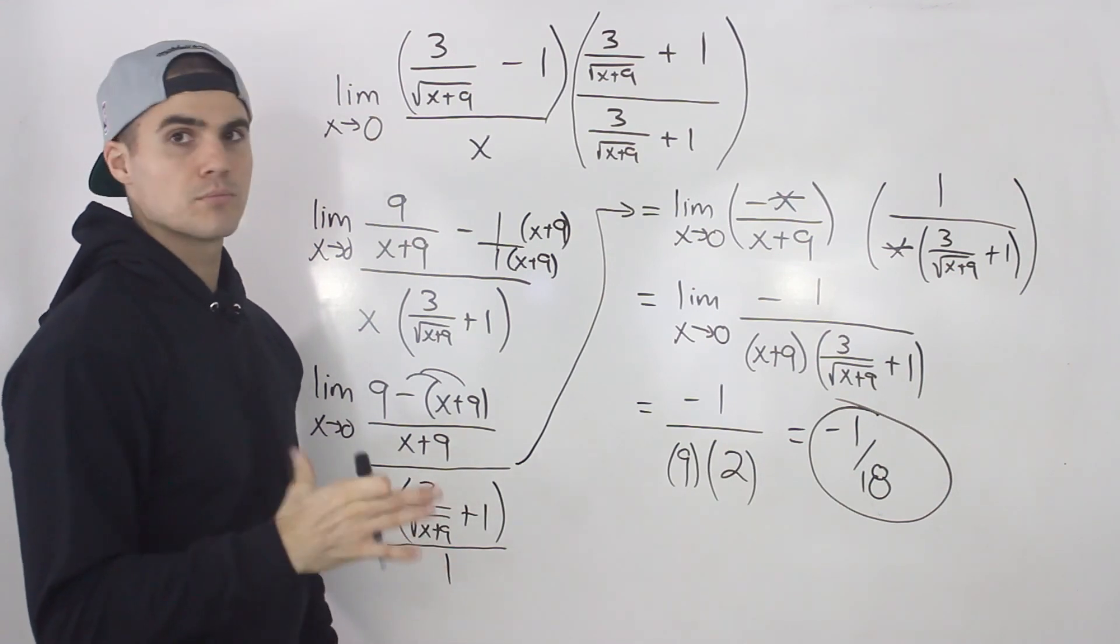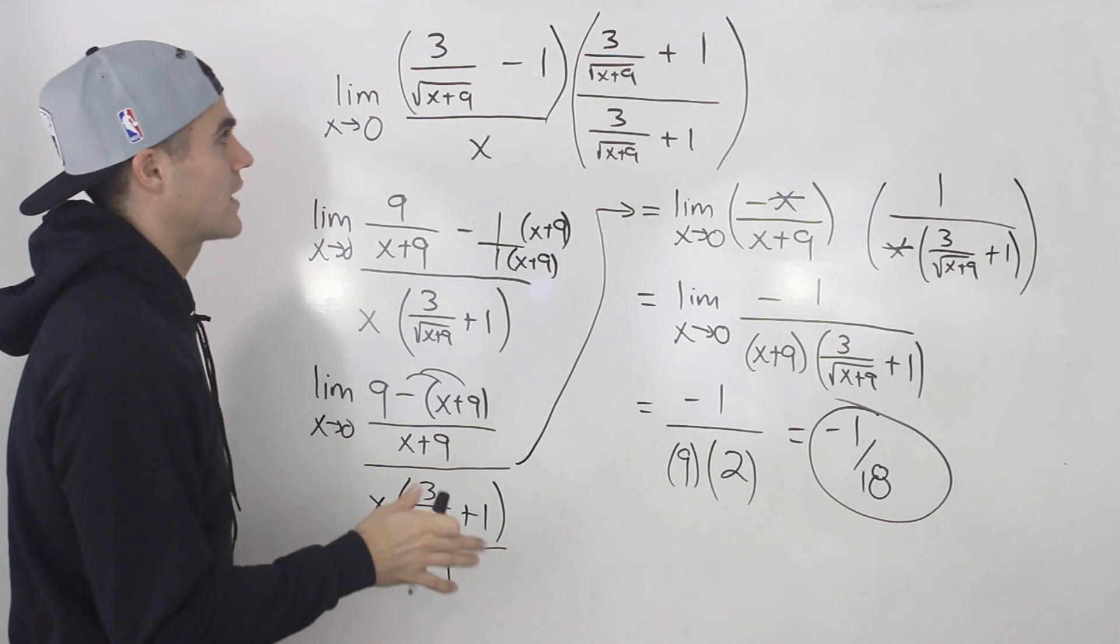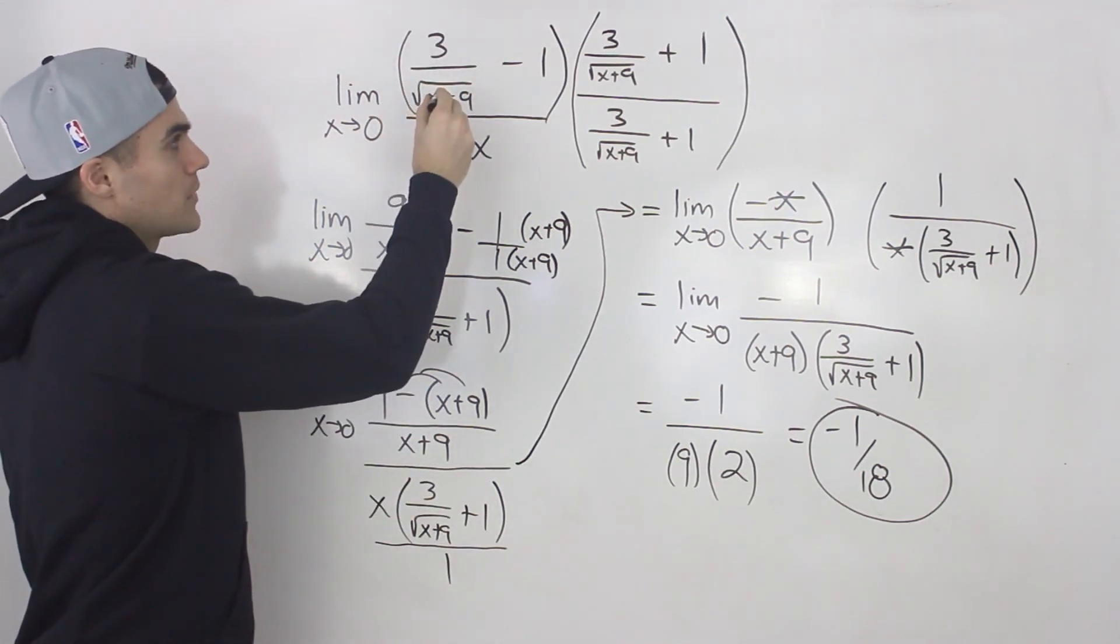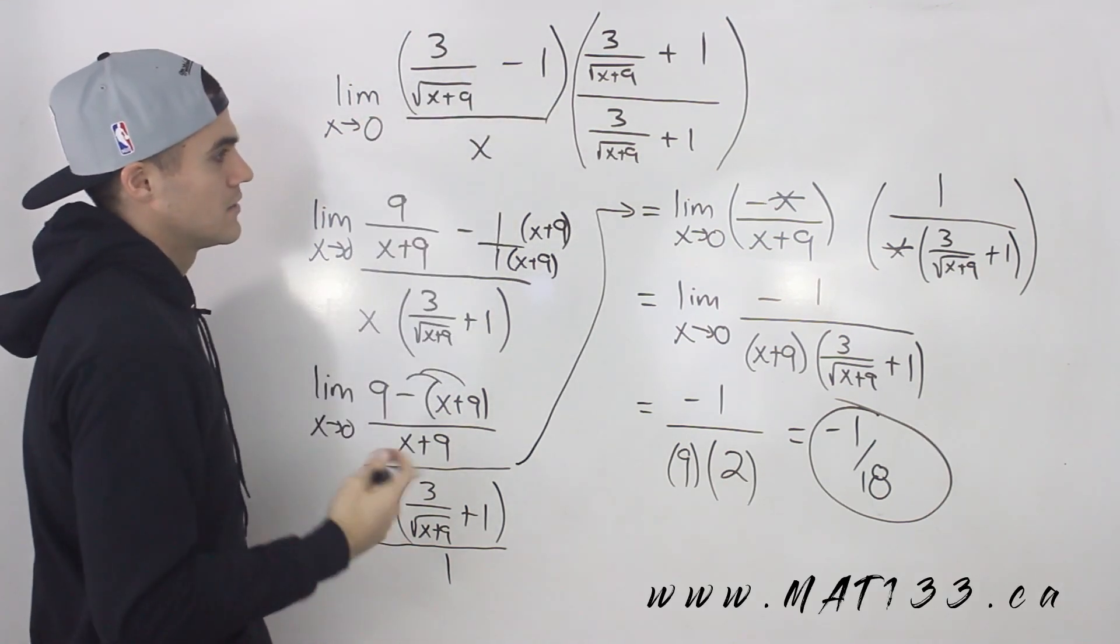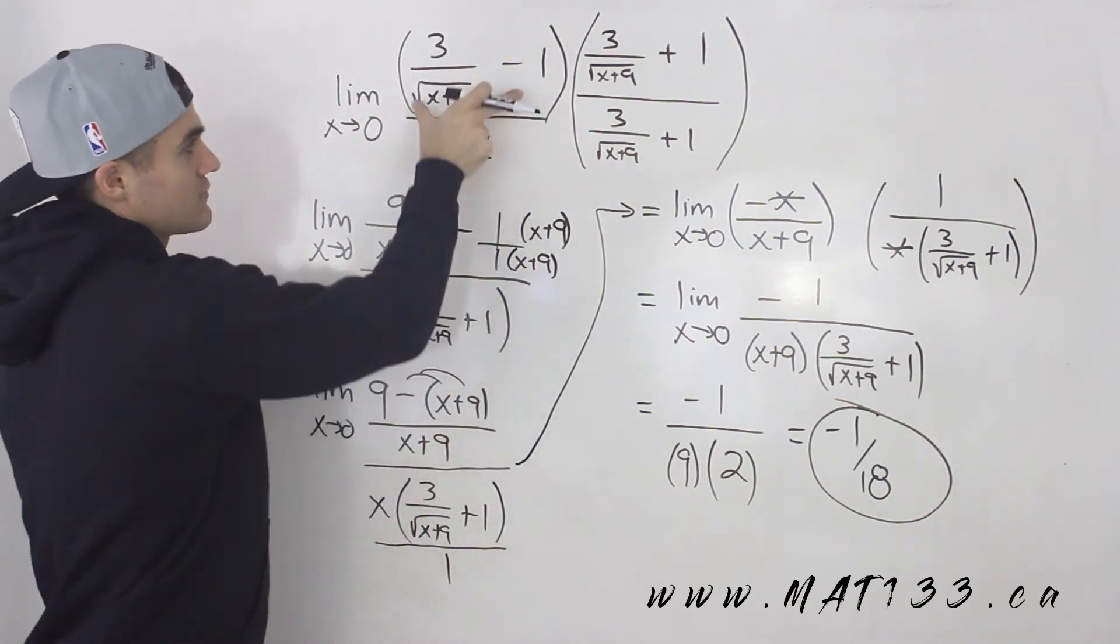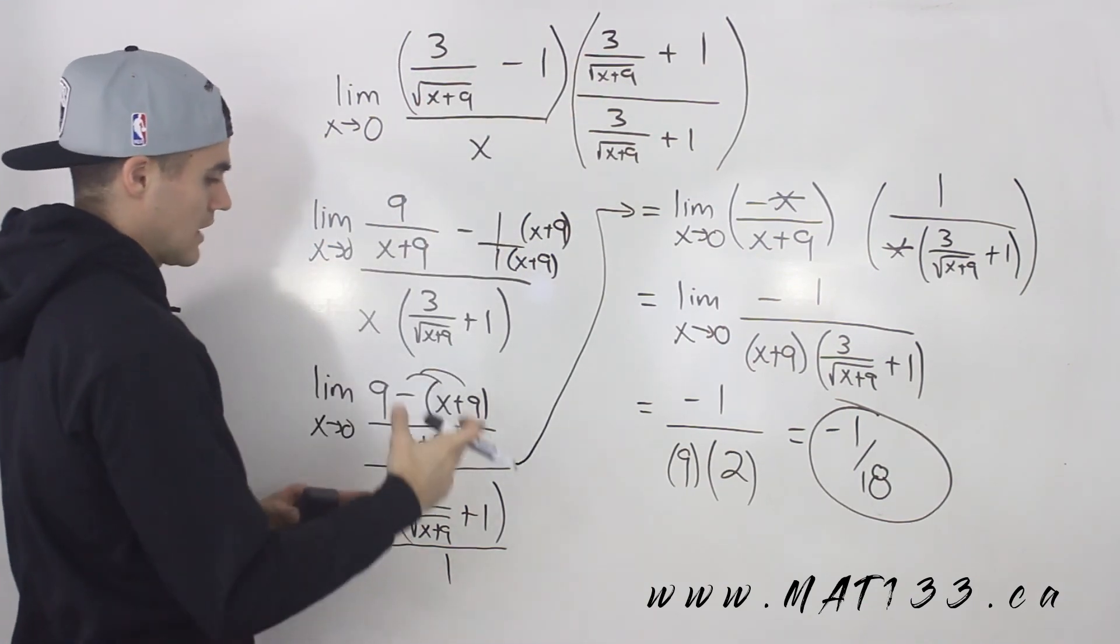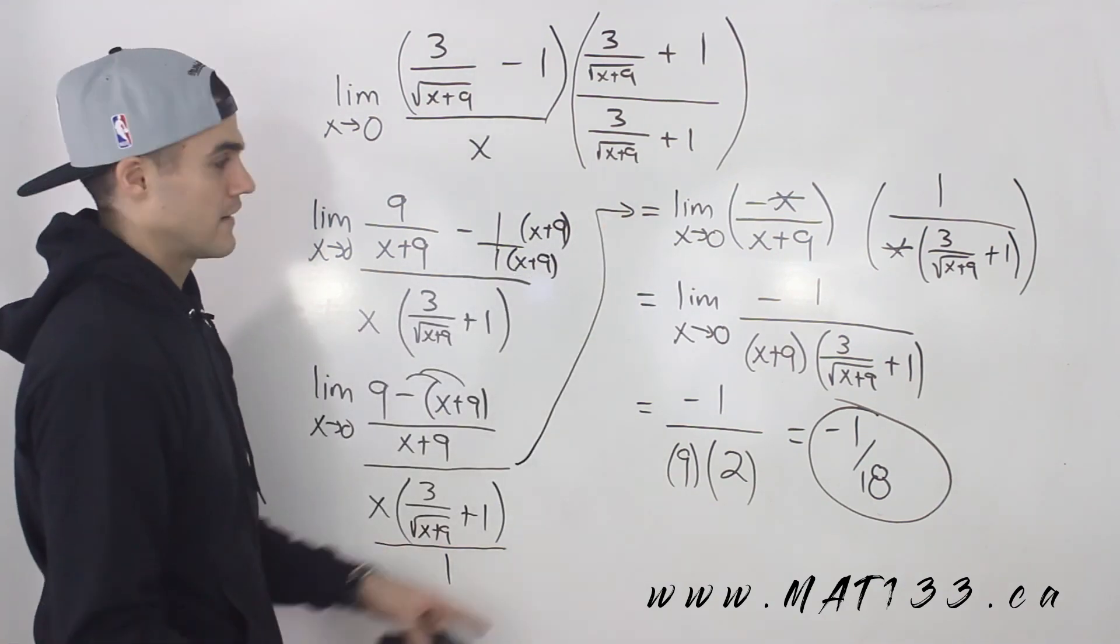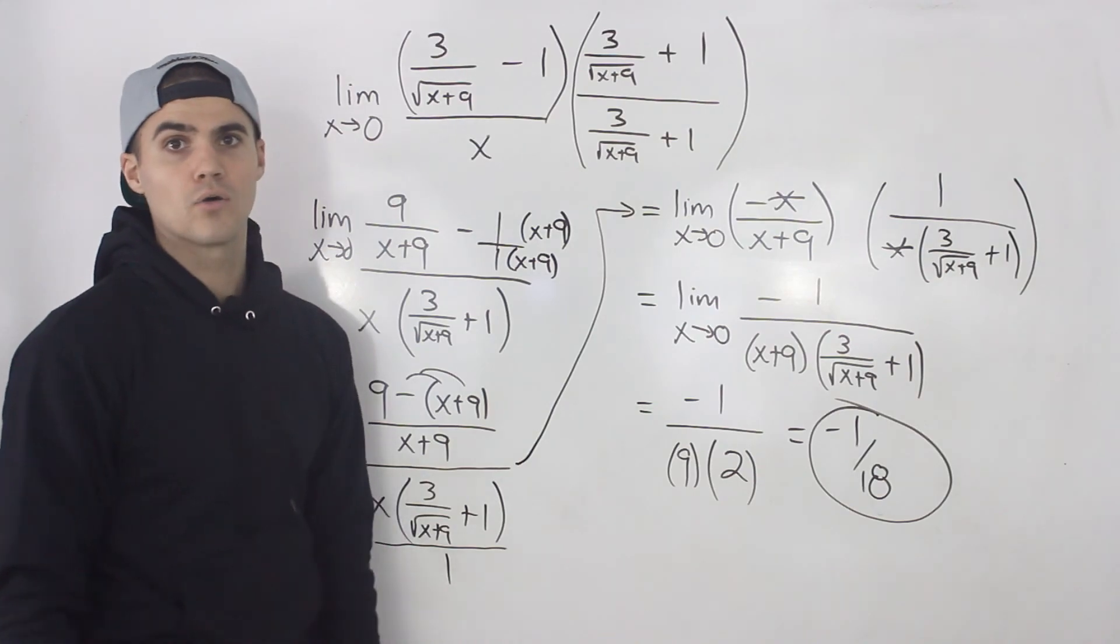So pretty tricky question, a little bit unique, a little bit different than the ones we did before when we were rationalizing, because this square root here was in a denominator and we were dealing with like a fraction in a fraction. But it's not too bad. You just have to take this two term radical, multiply it by its conjugate, and then that x will cancel out. And then finally you could plug in 0 for x and you end up getting negative 1 over 18.